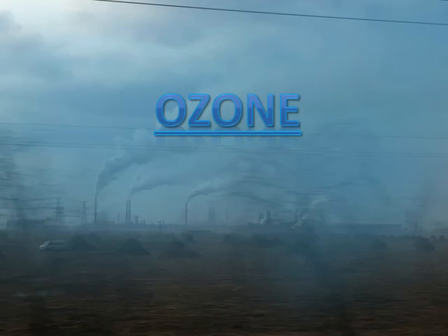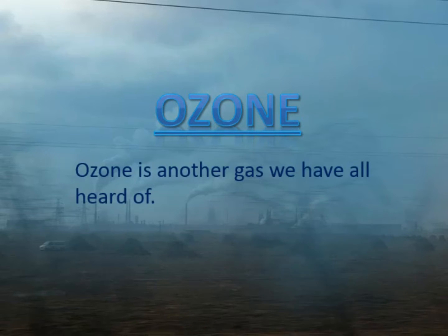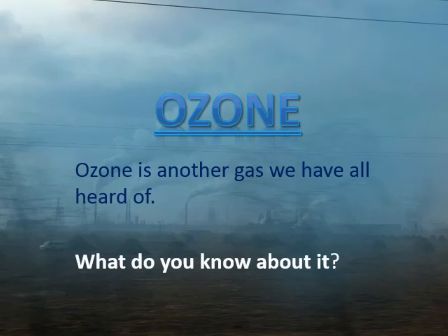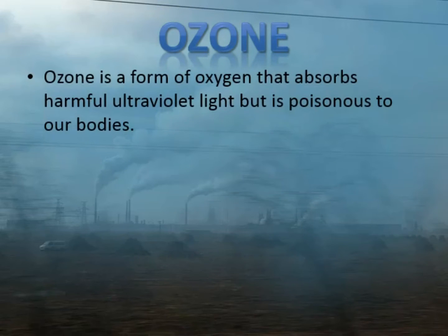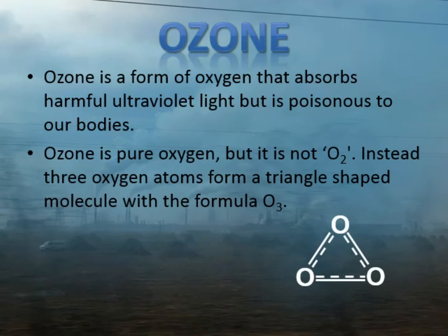Hi there everyone. We've talked about ozone already under air pollution — it's a gas you've probably heard of before. We're going to now talk about it in a little bit more detail in terms of what it does for us and to us. Our basic understanding of ozone is that it's a form of oxygen that absorbs ultraviolet light from the sun, but it's also poisonous to our bodies. It's pure oxygen but it's not O2, oxygen gas — instead it is O3.